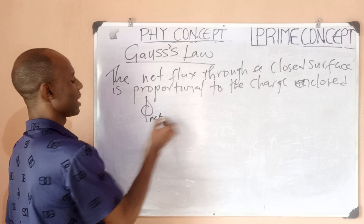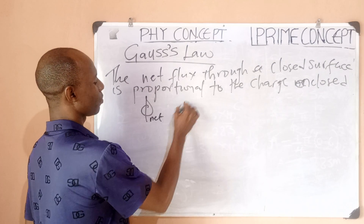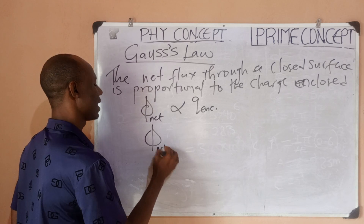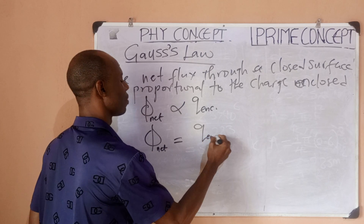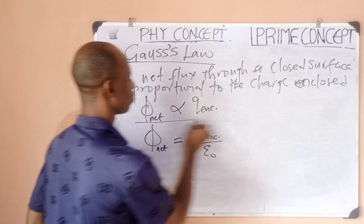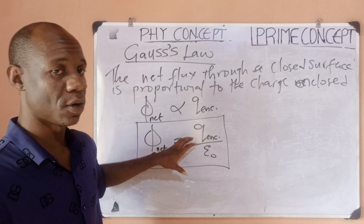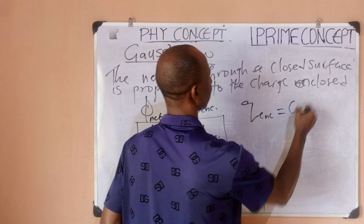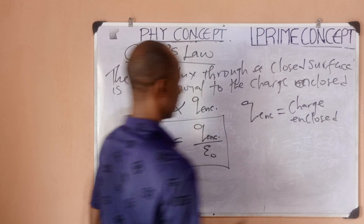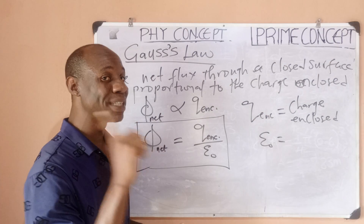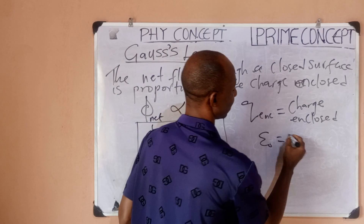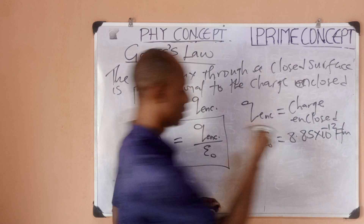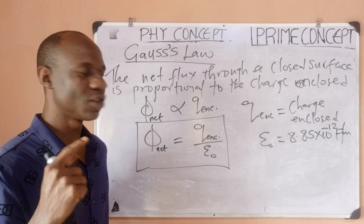Gauss's Law says the net flux through an enclosed surface is proportional to the charge enclosed. If we remove the proportionality sign and introduce a constant, the net flux equals the charge enclosed divided by epsilon naught. Epsilon naught stands for permittivity of free space, which is a constant with a value of 8.85 times 10 to the power of minus 12 farads per meter.